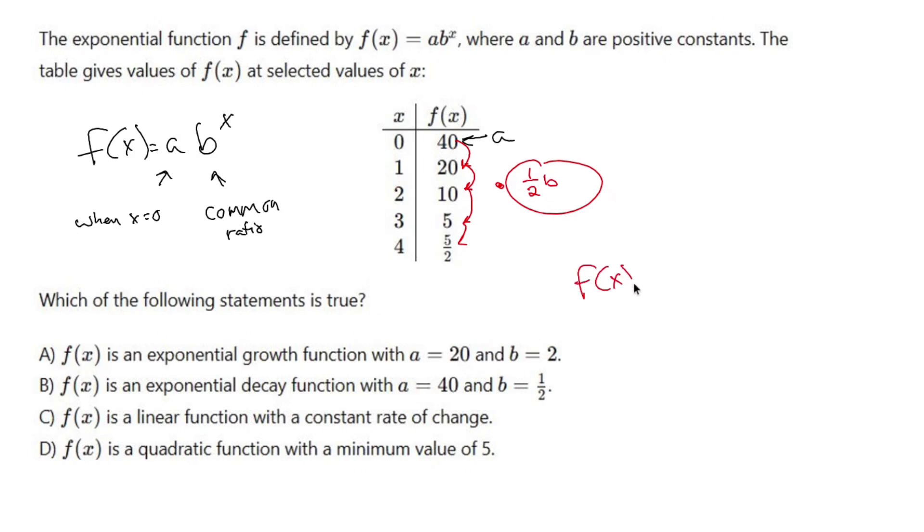So we can set up our equation as f(x) equals 40 times one half to the x power. So a is 40, b is a half, and that gives us b as our answer.